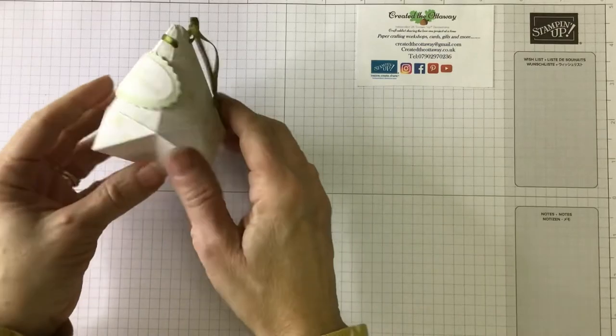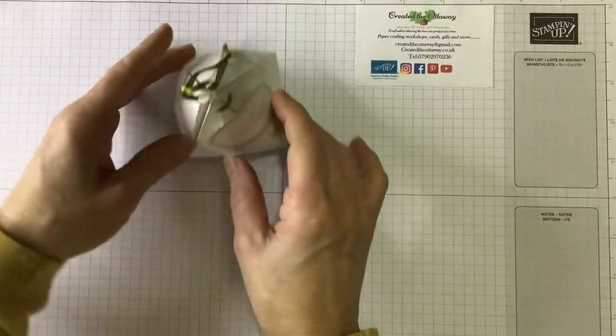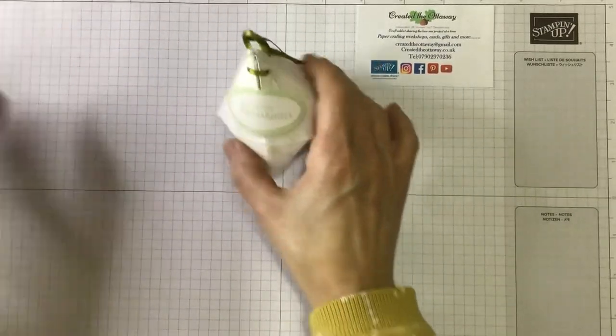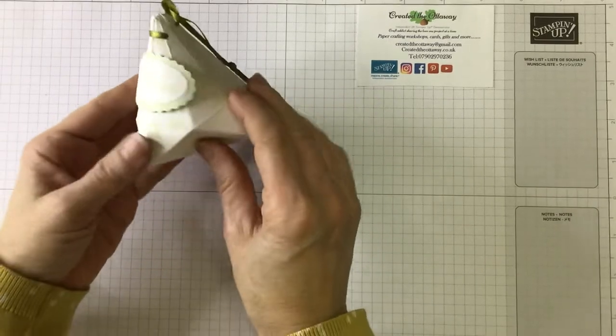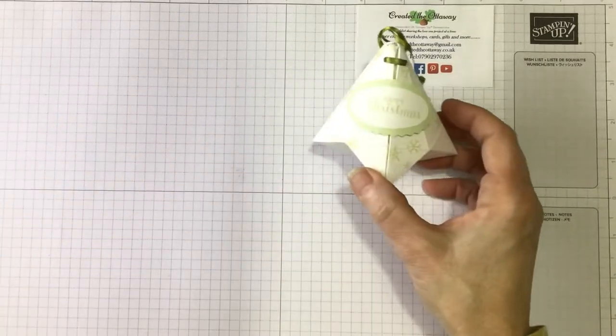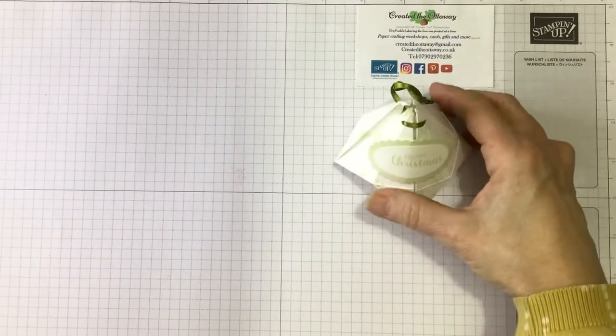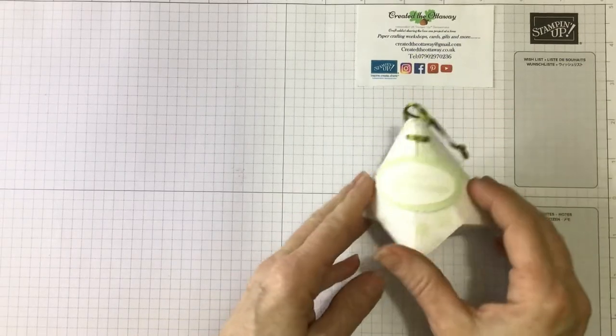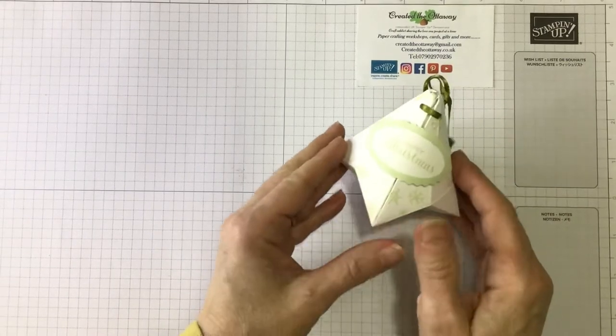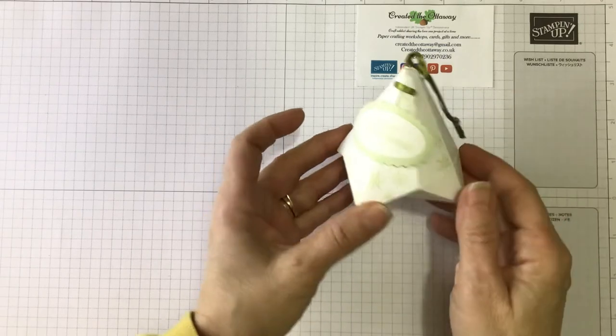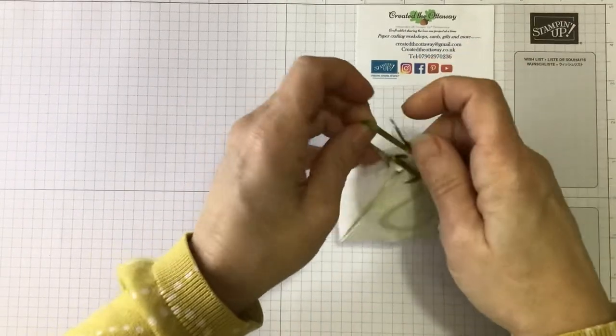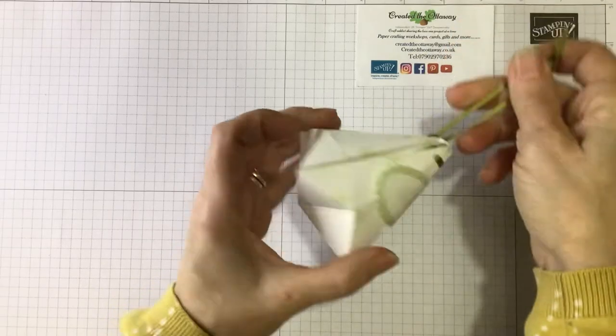So this week we've got this little make. It's like you could use it for a Christmas tree decoration. That's what it's like in white with I've stamped all over. I've used the oval punch as well just to put sentiment on, and I've put some ribbon on the top so that it can hang on the tree.